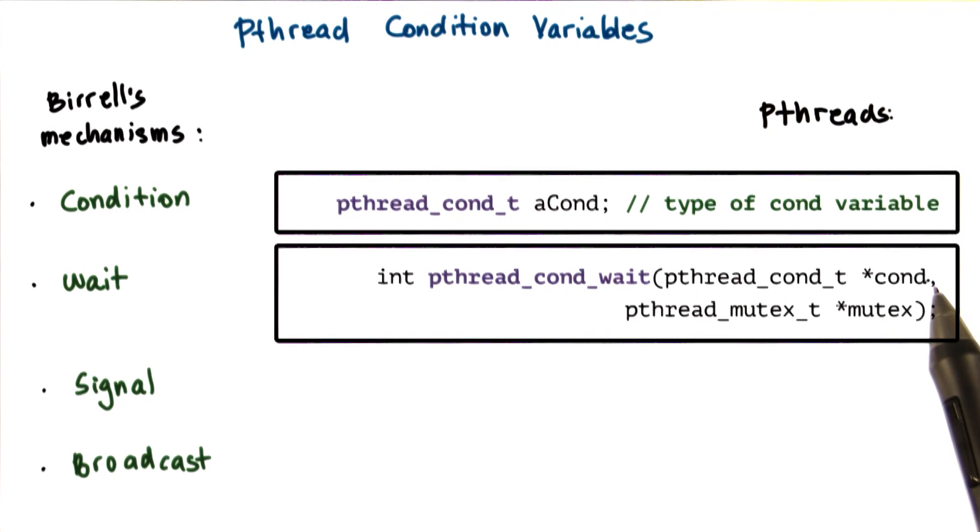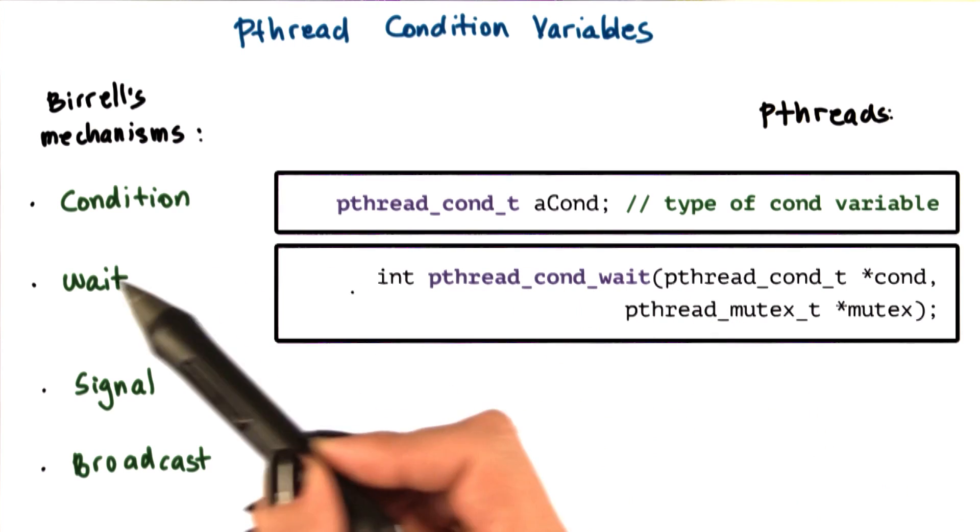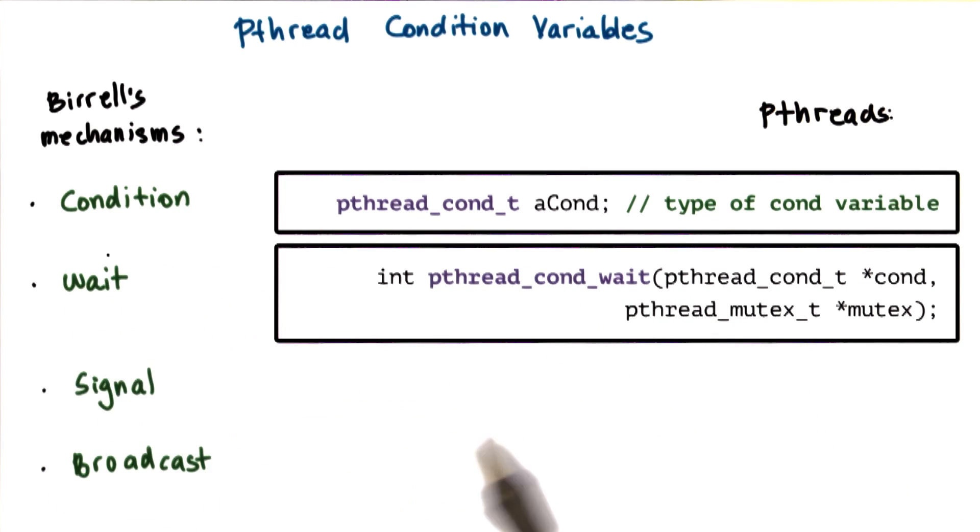When the thread is woken up, it will automatically reacquire the mutex before actually exiting the wait operation. This is identical to the behavior we saw in Beryl's wait.